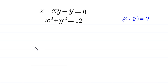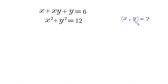Hello everyone, you are welcome. We will solve this system of equations: x plus xy plus y is equal to 6, and x squared plus y squared is equal to 12. Our job is to find all possible values of x and y. Let's call the first equation 1 and the second equation 2.